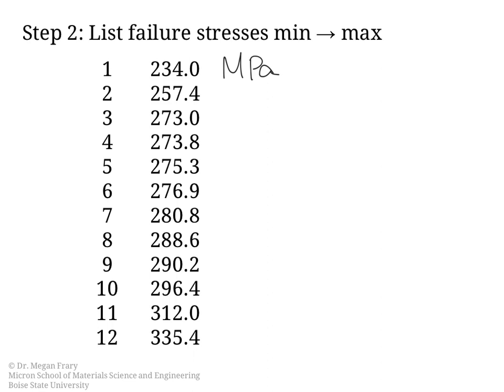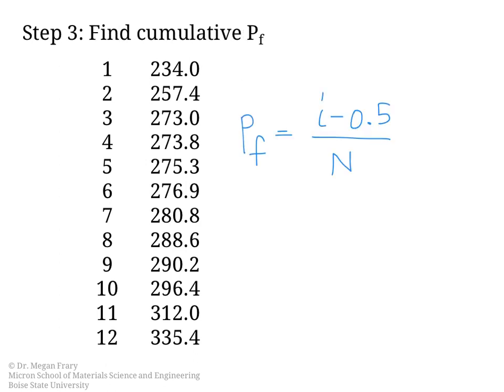The next step is that we want to find the cumulative probability of failure. When we have a discrete list like this, we can find the cumulative probability of failure from this expression: Pf = (i-0.5)/N. So i is the number of tests, so we plug in 1 in the first case, and N is the total number of tests, so in this particular example, N is equal to 12.